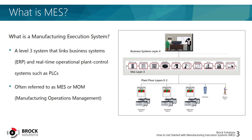To begin, I wanted to briefly describe what a manufacturing execution system is. A manufacturing execution system is a level three or layer three system that links your business systems or ERP systems at layer four and the real-time operational plant control systems such as PLCs, which are generally classified as layers zero through two. These are often referred to by their acronym MES, or sometimes MOM, which stands for Manufacturing Operations Management.